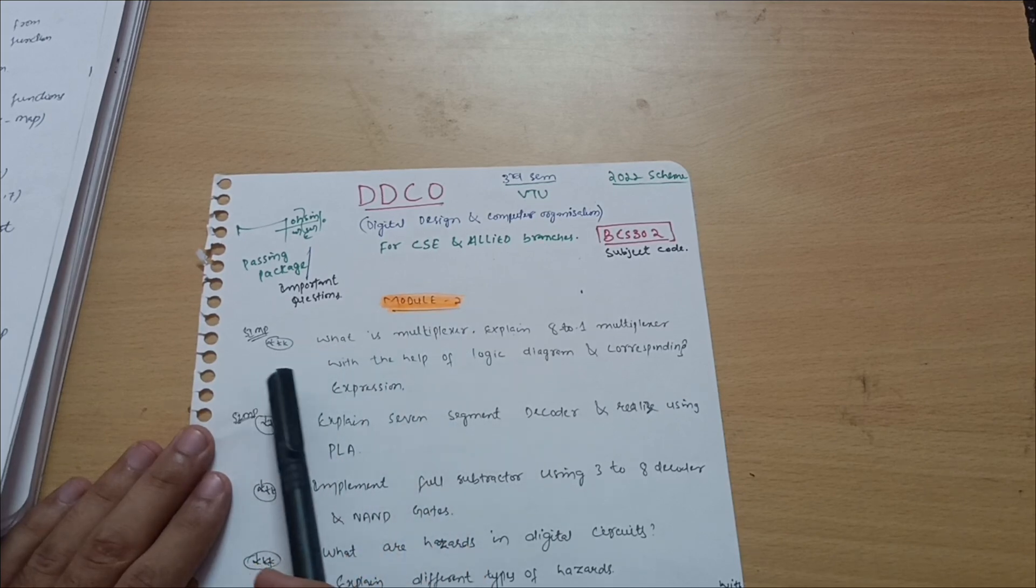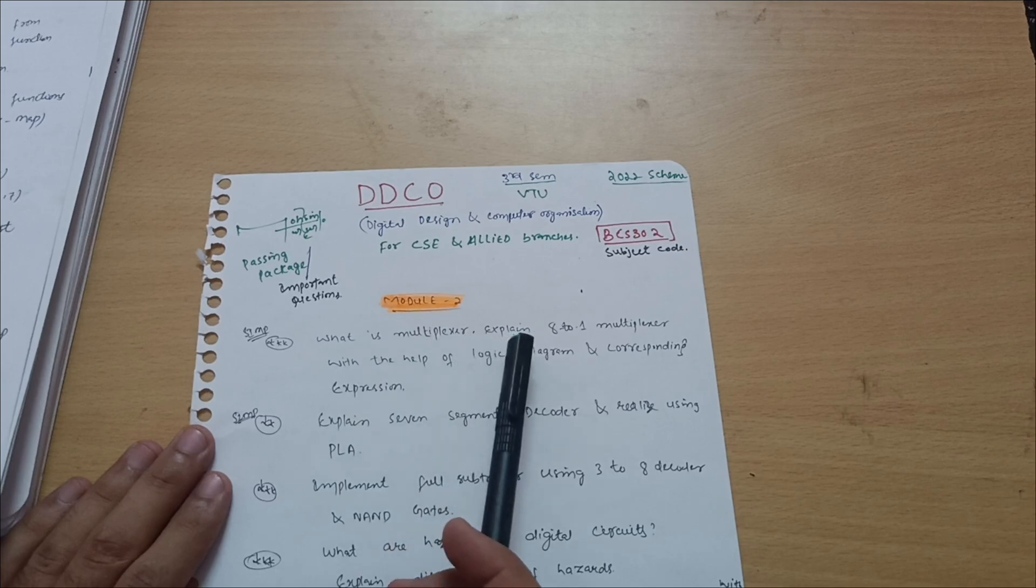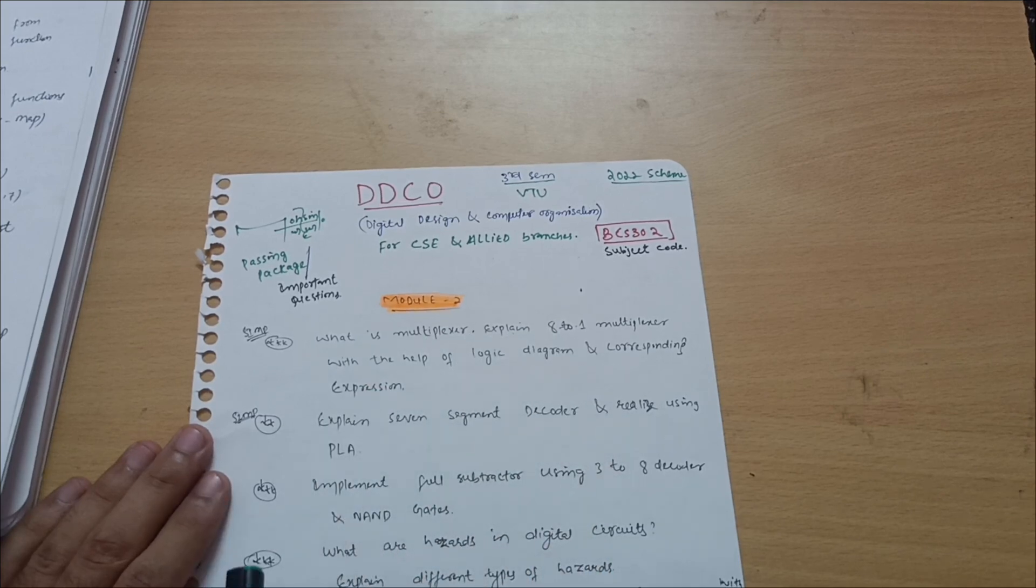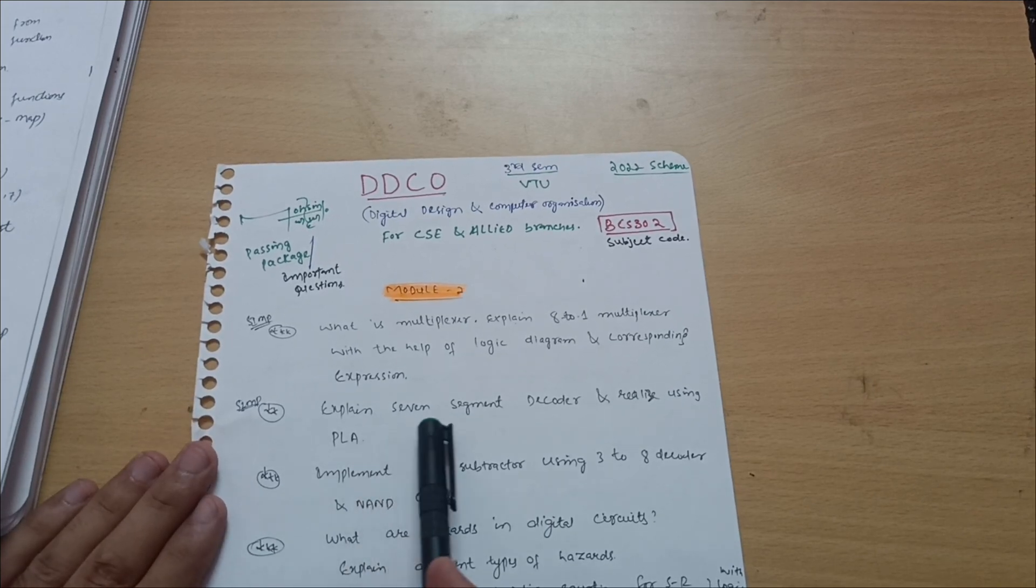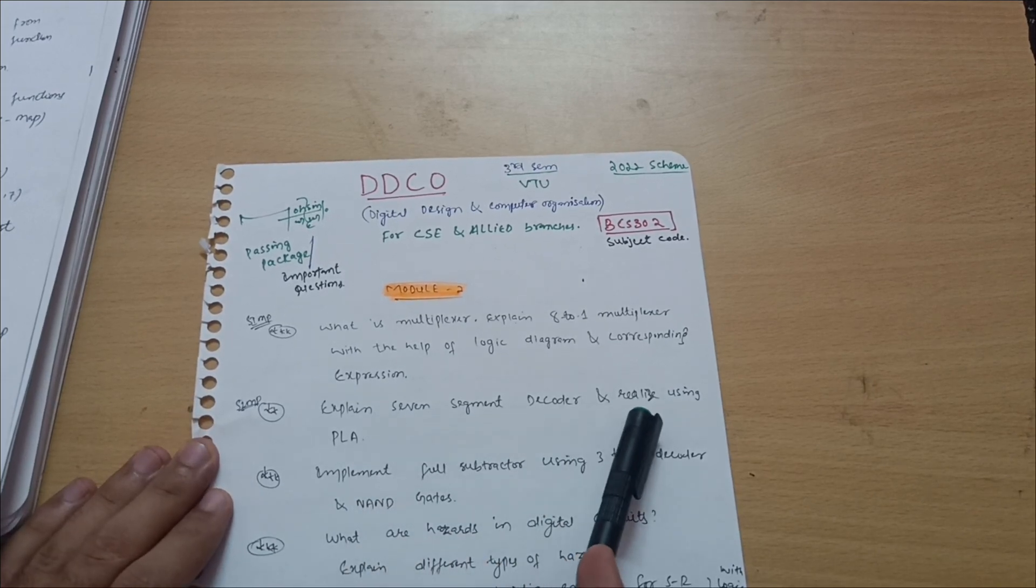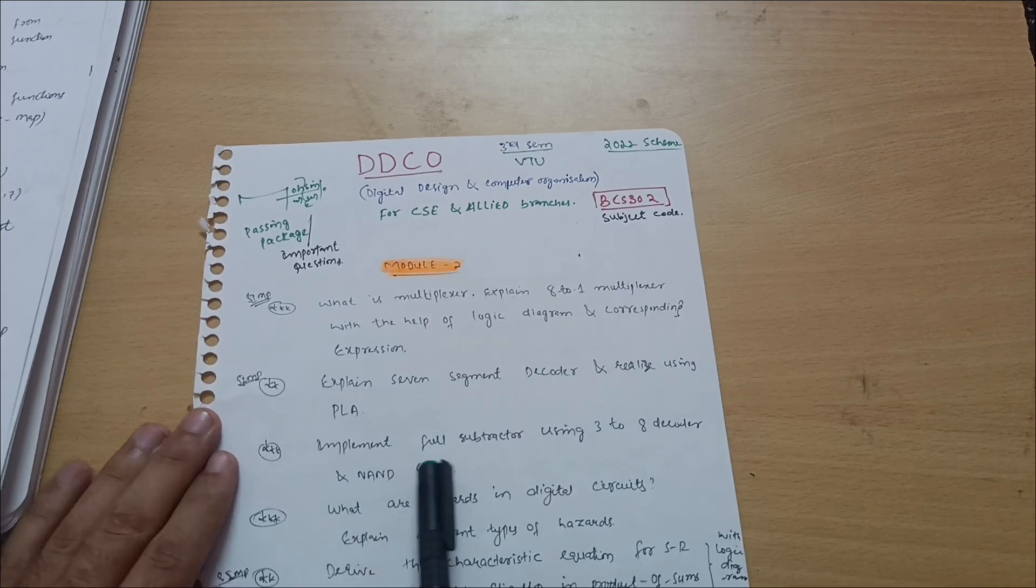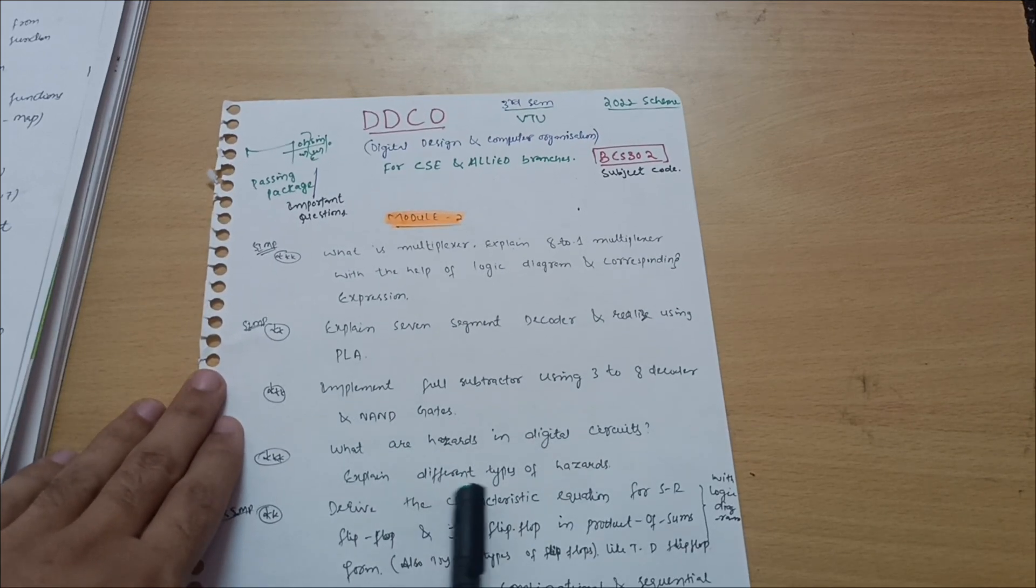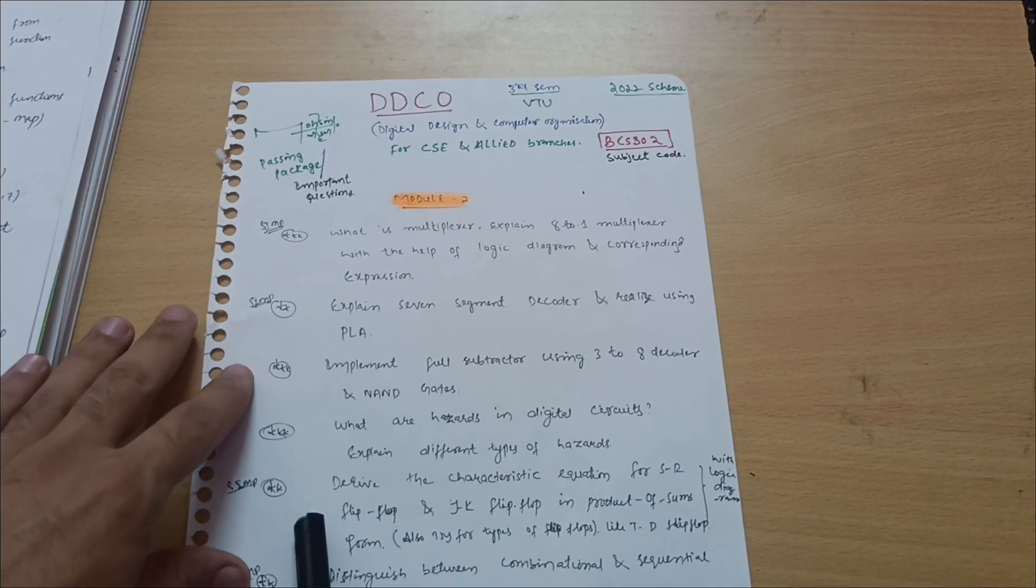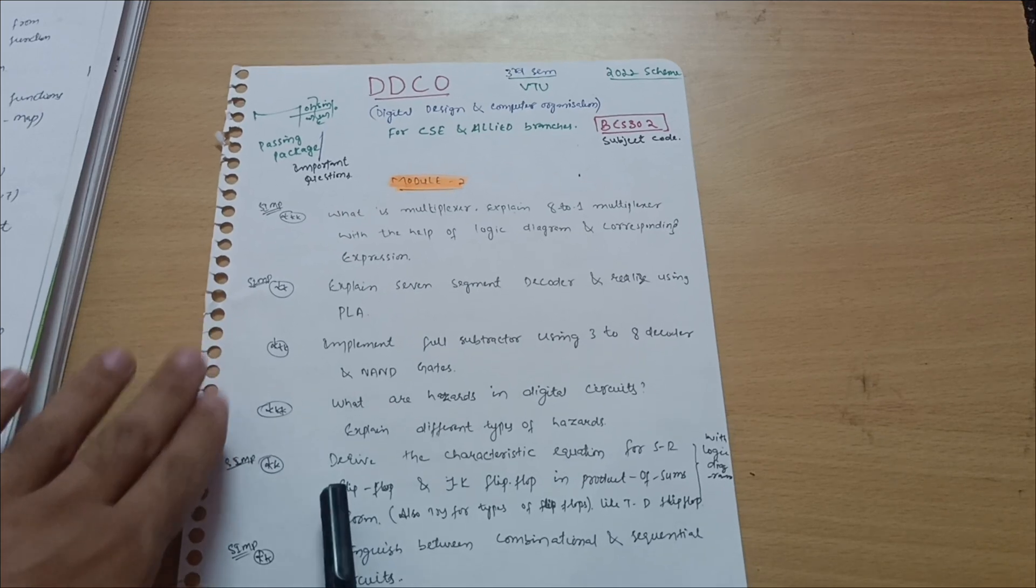In the module second, the super important questions are: What is multiplexer? Expand eight to one multiplexer with the help of a logic diagram and corresponding expression. Main focus should be on your diagrammatic part. Expand seven segment decoder and realize using PLA. Implement full subtractor using three to eight decoder and NAND gates. What are hazards in digital circuits? Explain different types of hazards.